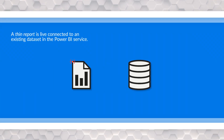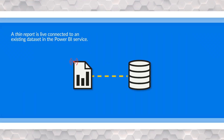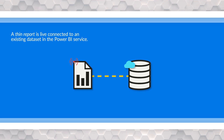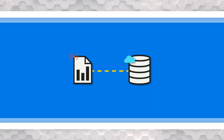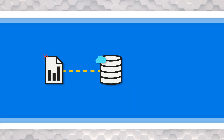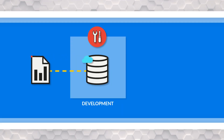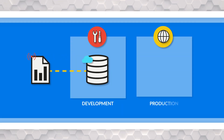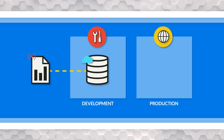A ThinReport is a report that's live connected to a dataset that's already published in Power BI. And let's say you don't have premium and all the fancy features — you just have a pro license. Your development environment consists, for simplicity's sake, of just a development and a production environment.